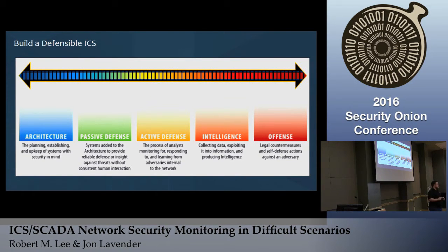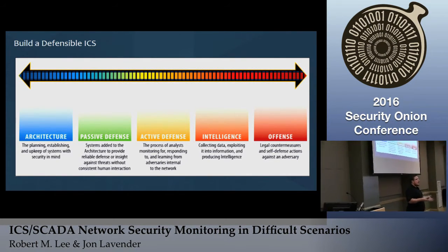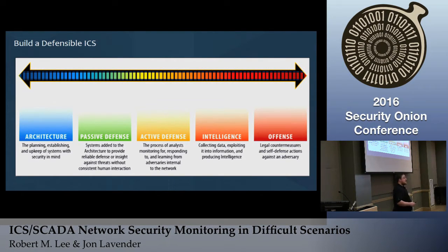Before getting into deploying and monitoring an ICS, I reference the sliding scale of cybersecurity. When someone says 'I'm a cybersecurity person,' that tells me nothing. So I position that there are five categories to increase security in an organization. On the far left is architecture — building security in from the start. If you're patching systems, that's not cyber defense; you're an architect. It's probably one of the most valuable things you can do. Passive defenses are your firewalls, endpoint security solutions — anything your vendors say is advanced but is fundamentally a box on the network.